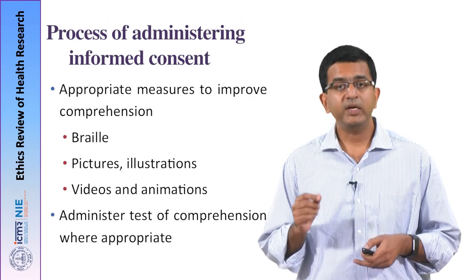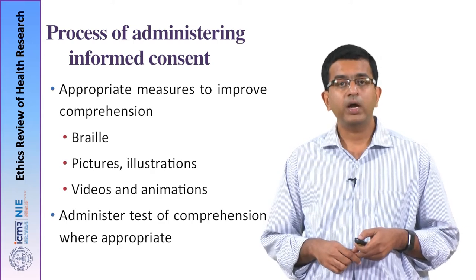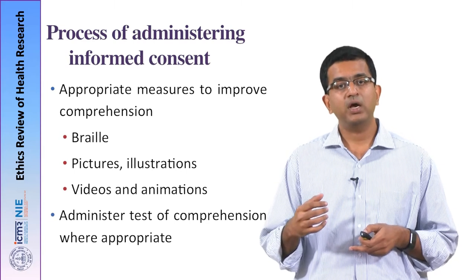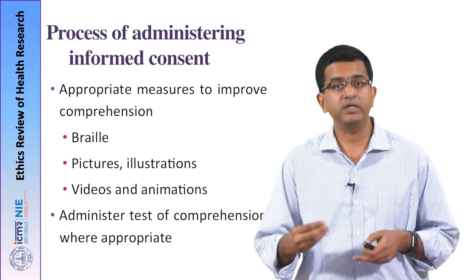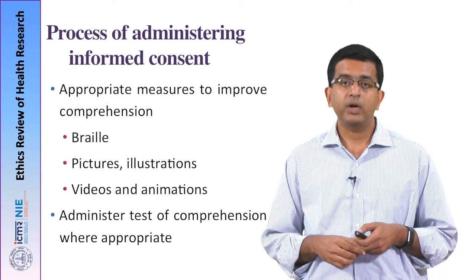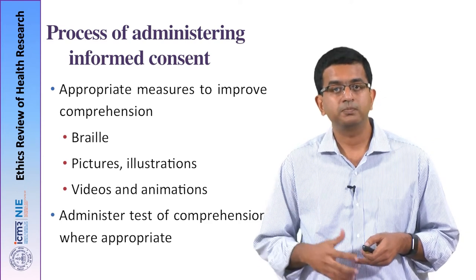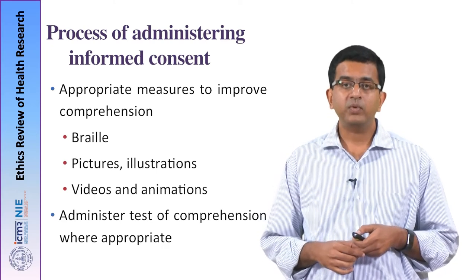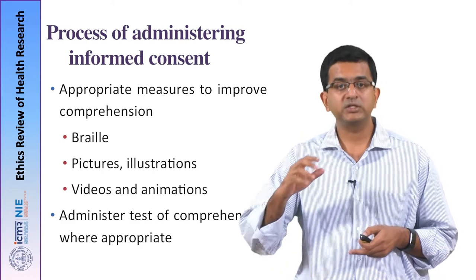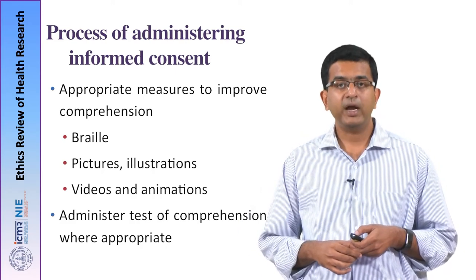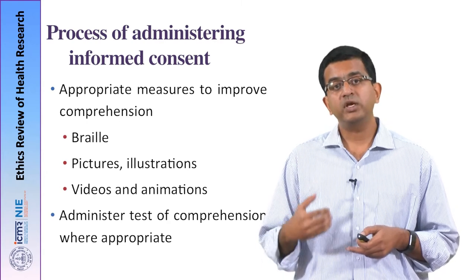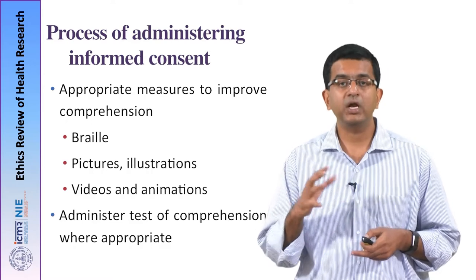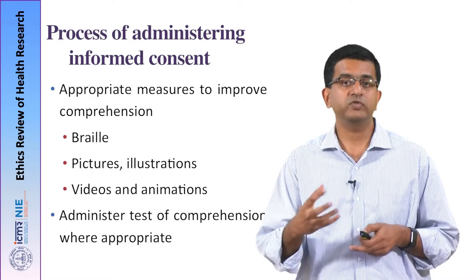Measures have to be taken to ensure adequate comprehension of the content. For example, if the participants have visual disability, then the informed consent document has to be in braille. If they have limited ability to read and write, the informed consent should be in the form of pictures, graphics, or illustrations. And in case of administering informed consent to children, it would be good to have video clippings, illustrations, and colourful pictures to explain the process of the study.